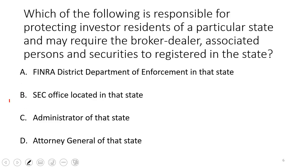Which entity is responsible for protecting investor residents of a particular state and may require broker-dealers, associated persons, and securities to be registered in the state? This is the state administrator — the Uniform Securities Act, tested on the Series 63 or Series 66. The North American Securities Administrators Association (NASAA) allows you to conduct business in the state once you pass. Most SIE takers will next take a Series 6 or 7, then a 63 or 66.